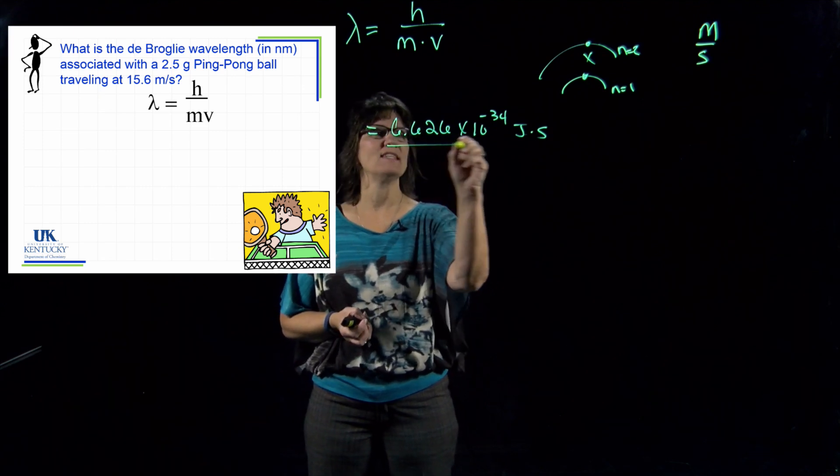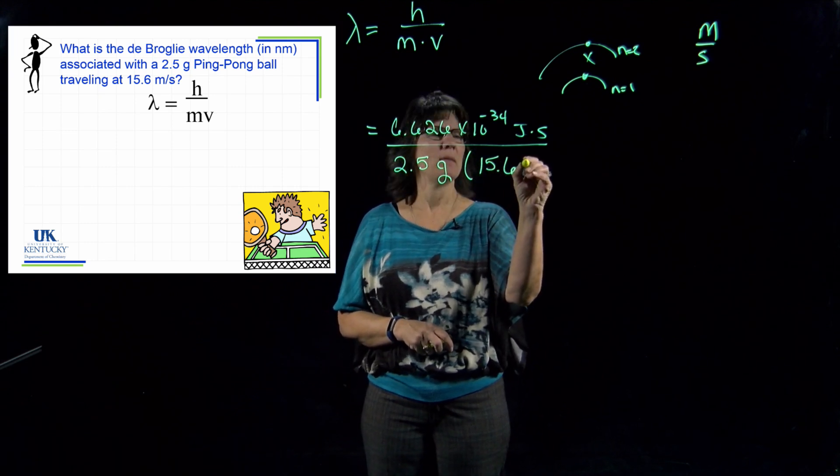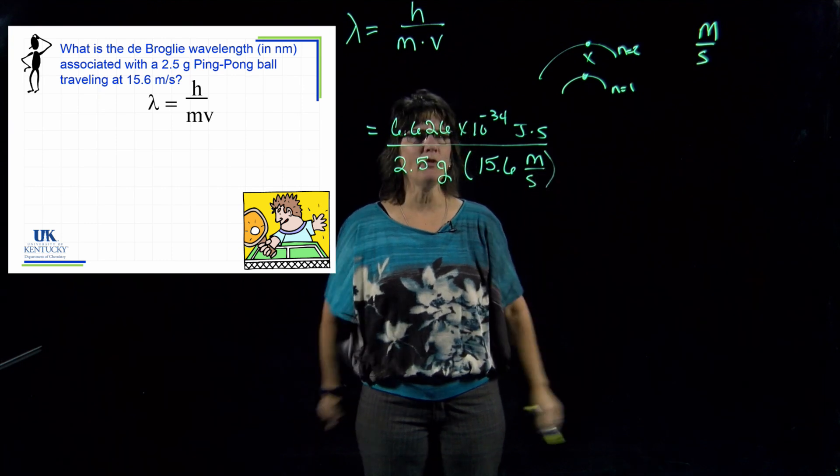So we've got our equation: the wavelength of a particle is Planck's constant divided by mass times the velocity. Let's plug in what we know. We know Planck's constant: 6.626 times 10 to the negative 34 joules times seconds. They tell me the mass—we're doing it for a ping pong ball, so any particle is going to have a wavelength associated with it. We'll see how crazy its wavelength is here in a minute, but 2.5 grams I'll put in there because they gave me a mass, and they gave me a velocity of 15.6 meters per second. Now I've written all my units, and nothing cancels.